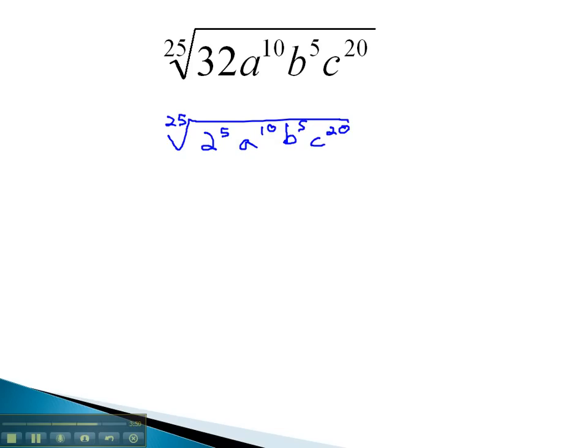The index and all the exponents you can see are divisible by 5. 25 divided by 5 gives us 5 for the new index. And on the 2, 5 divided by 5 is 2 to the 1st, or just 2. a to the 10 divided by 5 is squared. b to the 5 divided by 5 is just 1, or b. And c to the 20 divided by 5 is 4.